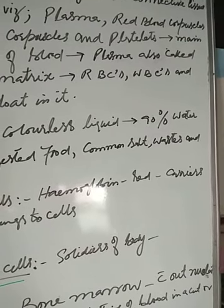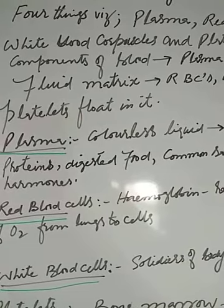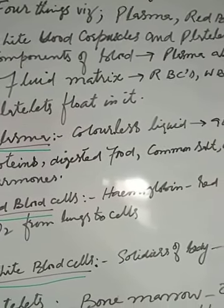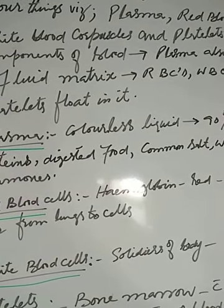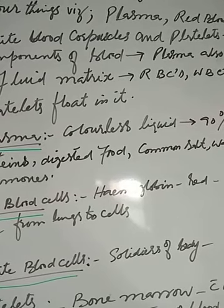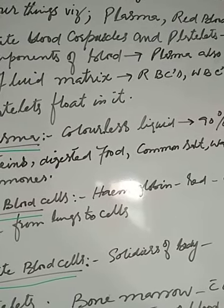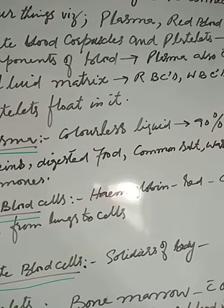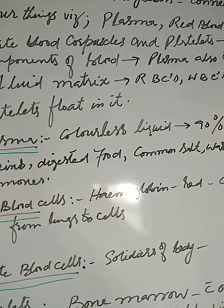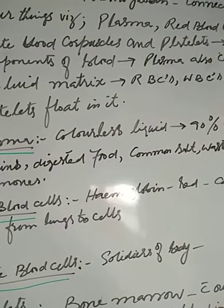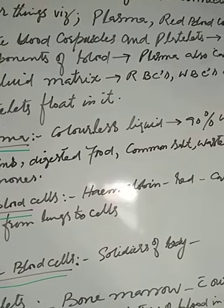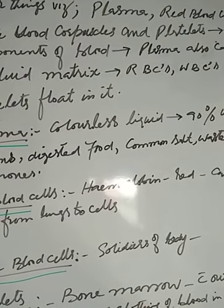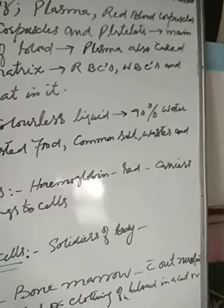Now we will discuss the four components of blood. First is plasma. The liquid part of blood is called plasma. It is a colorless liquid which consists mainly of water with many substances dissolved in it. Plasma contains about 90% water.